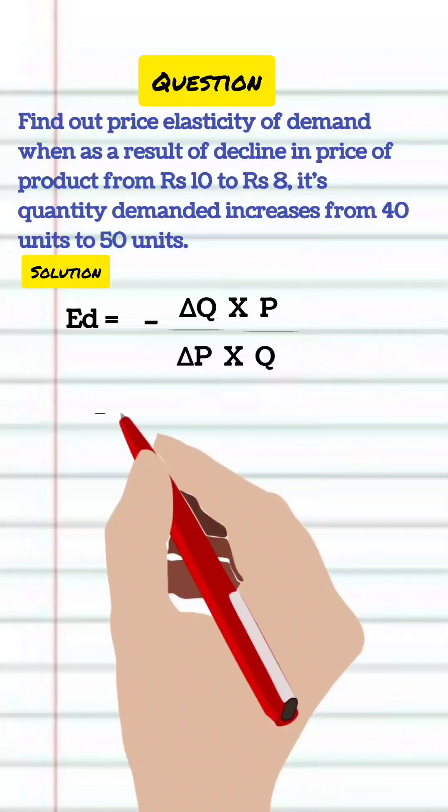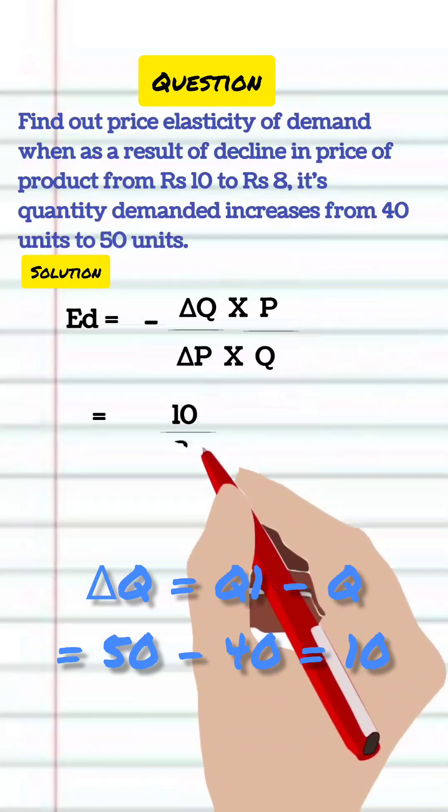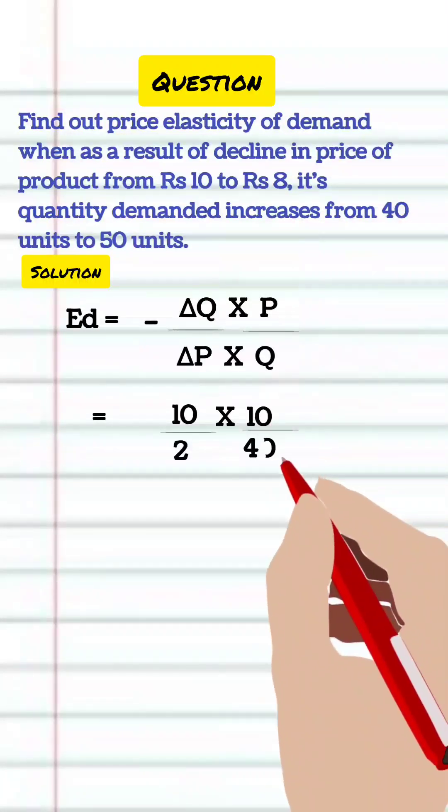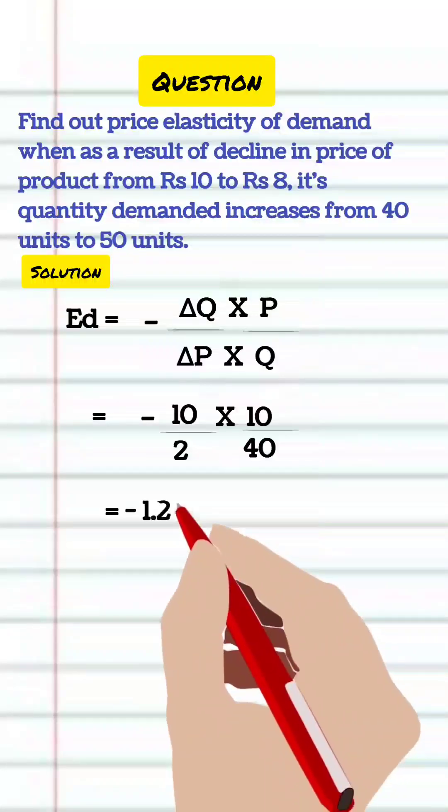In the given question, change in quantity that is delta q is 10 and change in price that is delta p is 2. Initial price is 10 and initial quantity is 40. Hence elasticity of demand will be 1.25.